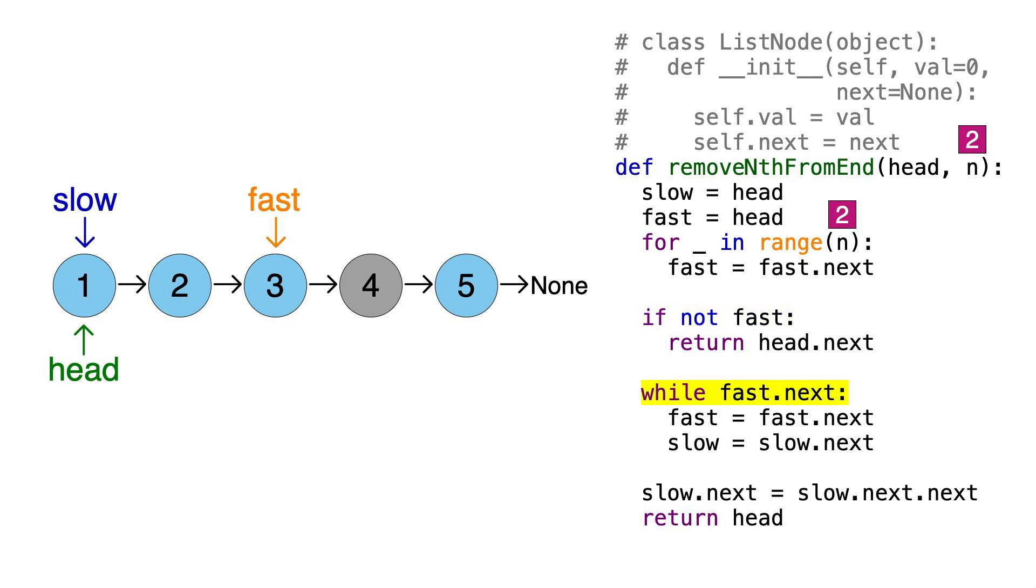Now we'll keep moving up both pointers, as long as fast.next is not none. So let's move up fast, then move up slow. We haven't reached the end yet, so let's move up both pointers one more time. Now fast.next points to none, so we're ready to remove node 4 by using the slow pointer to manipulate node 3.